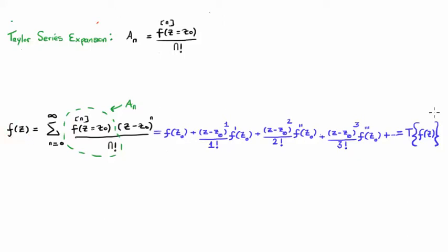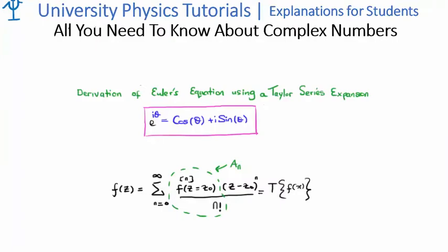So basically all of these terms added to infinity are equivalent to our f of z. And when I take a Taylor series, I'm going to use the nomenclature of T outside of the function to say I'm taking a Taylor series. Now in this video, I won't be going into detail and showing the Taylor series of an exponential or cosine or sine. I'll be basically giving you the results. However, I will show you all of the answers in detail subsequently.